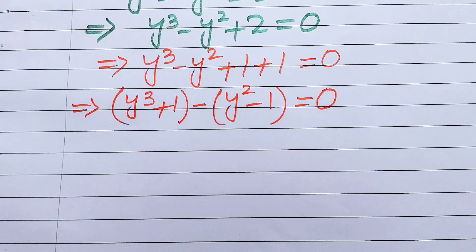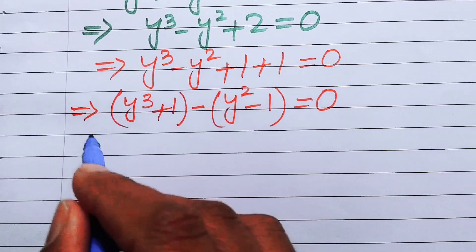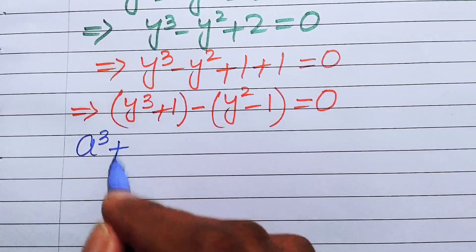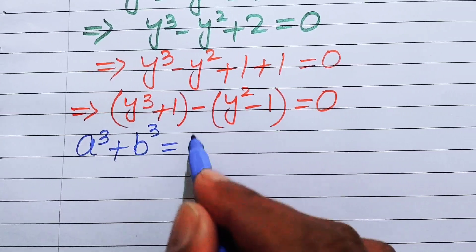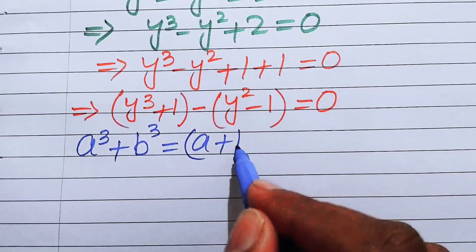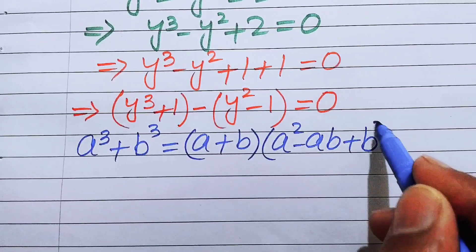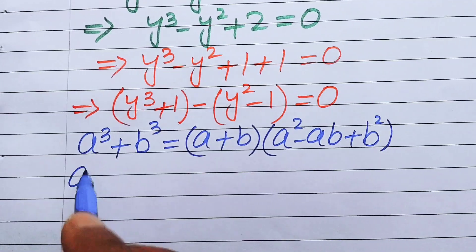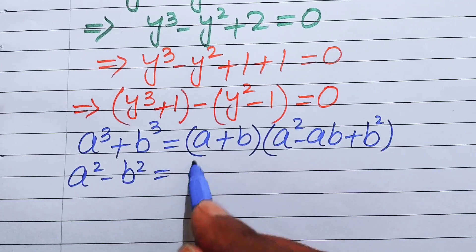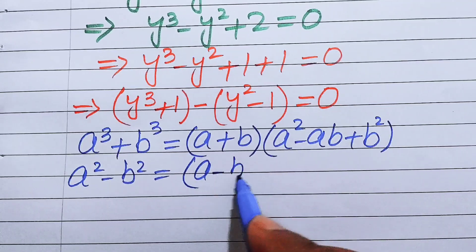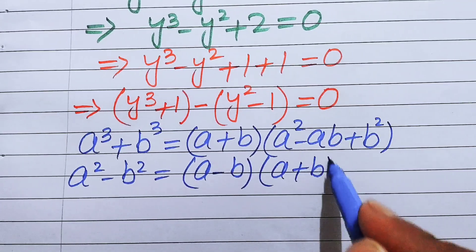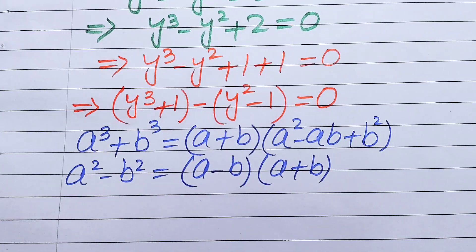In the next step we use the cubic and square identities. The cubic identity states a cubed plus b cubed equals a plus b times a squared minus ab plus b squared. The square identity states a squared minus b squared equals a minus b times a plus b.